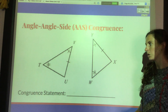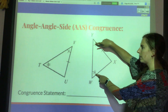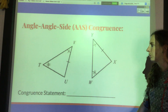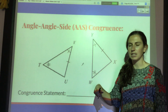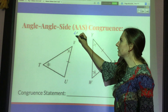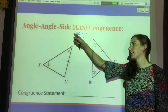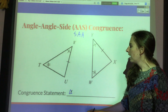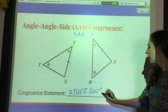Angle-angle-side also works if you have two angles and a side on the outside. See how I have these two angles, but the side in between them is not what's congruent — it's the side on the outside. That will work too: angle-angle-side. You could also call it side-angle-angle because it means the same thing, but typically we call it angle-angle-side. So triangle TUV is congruent to triangle WXY.